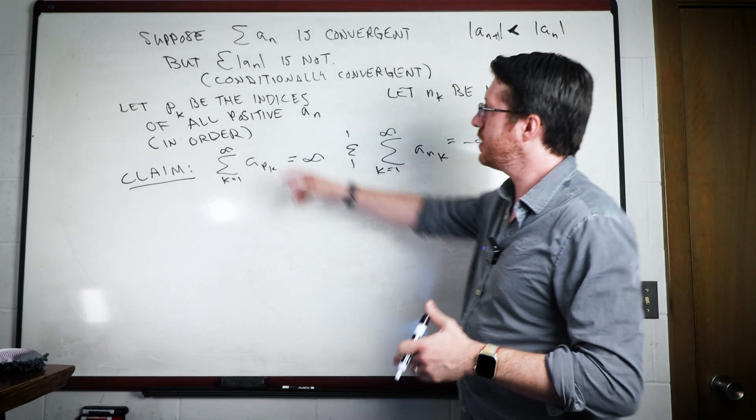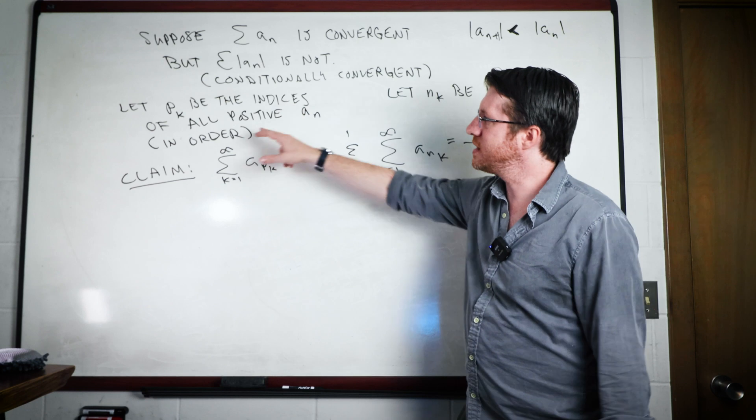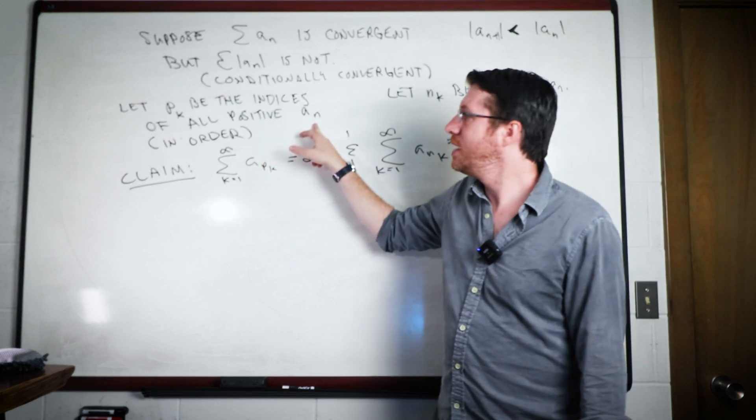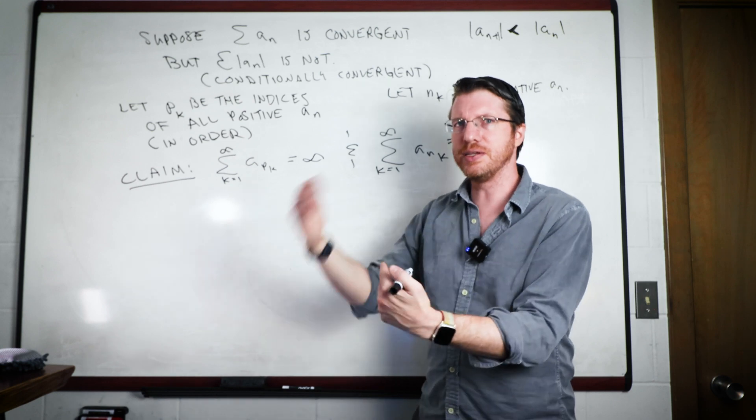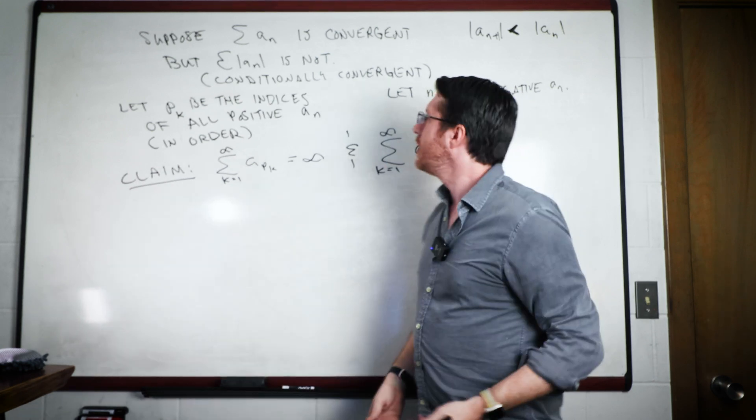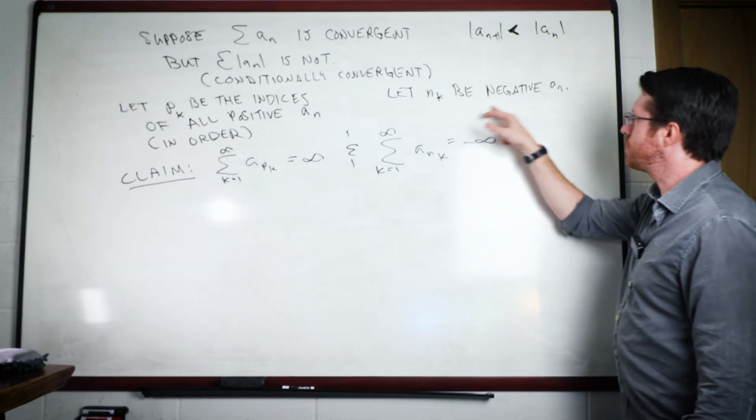So what I'm going to do is I'm going to take p_k to be all the indices of all the positive a_n terms. And I'm going to assume that this is all in order. So p_1 is going to be less than p_2, less than p_3, et cetera. And ditto for the n_k terms for the negative a_n.